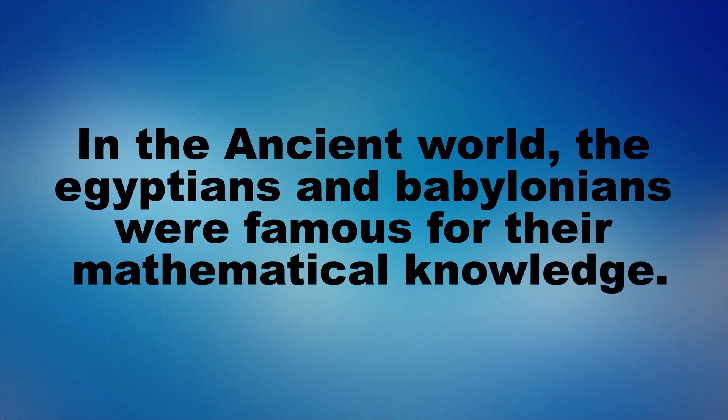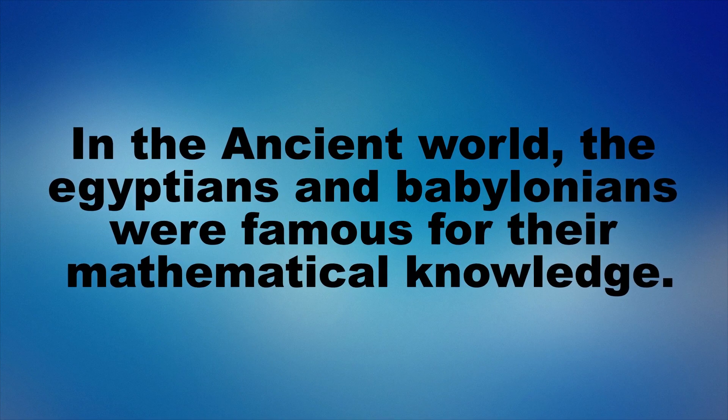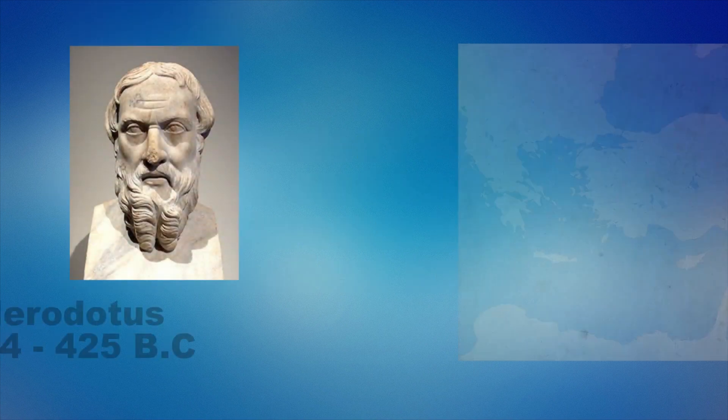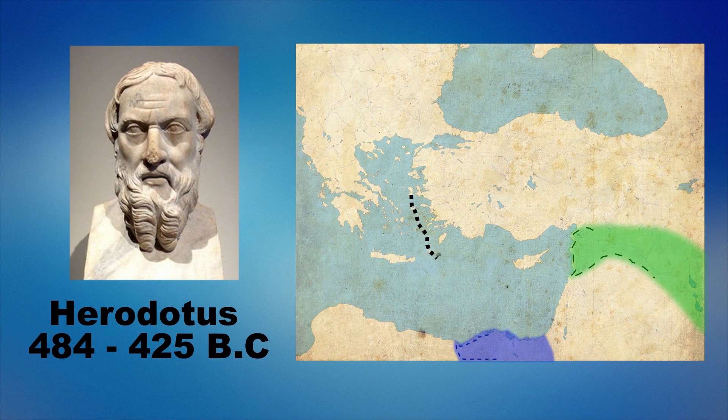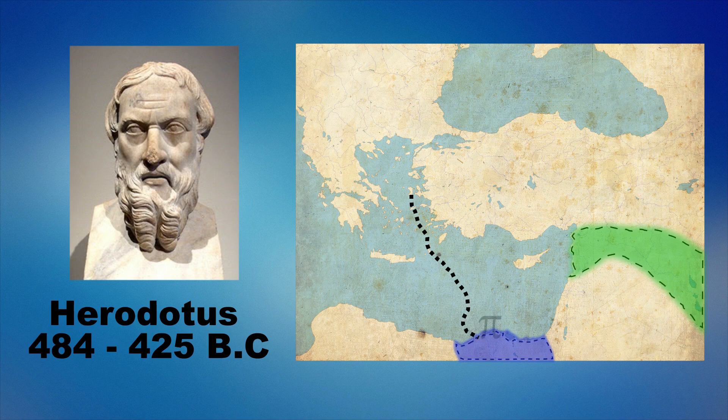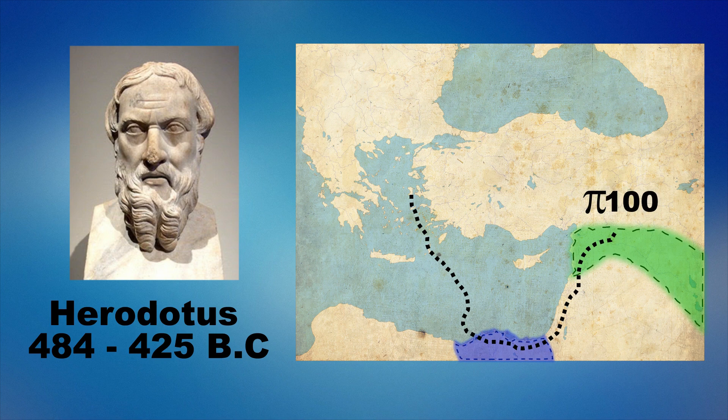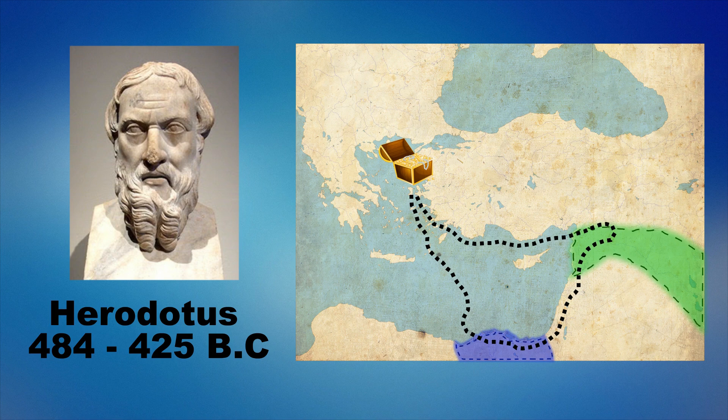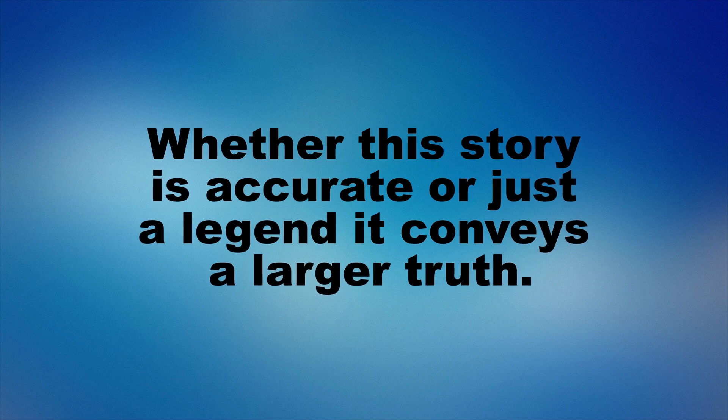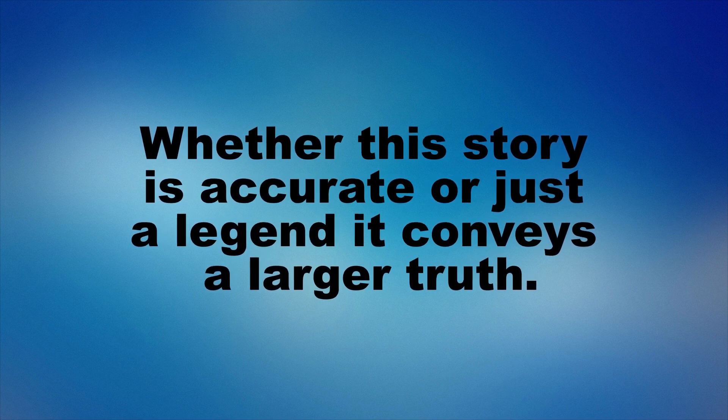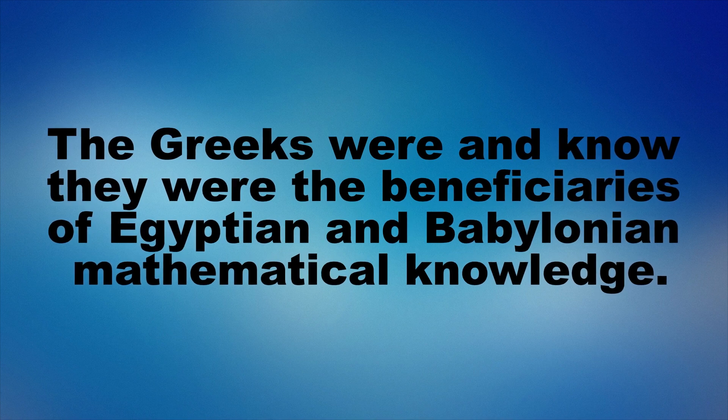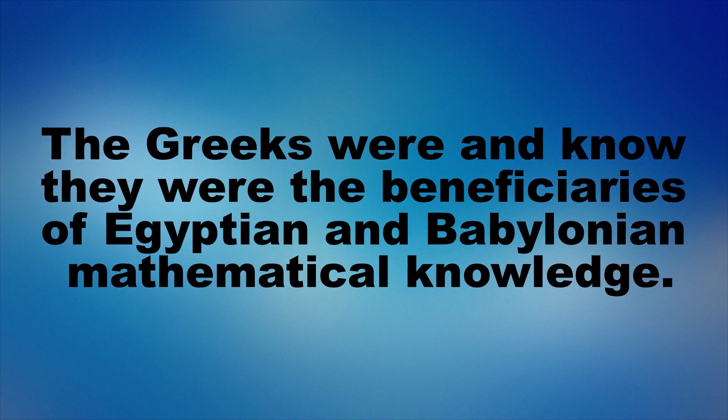In the ancient world the Egyptians and Babylonians were famous for their mathematical knowledge. In fact, the 5th century Greek chronicler Herodotus reported that Pythagoras had traveled to Egypt where he was introduced to the wonders of Egyptian mathematics by a priest, and that he later traveled to Babylonia where he came in contact with Babylonian mathematics and eventually traveled back to his home at the island of Samos, bearing the treasures of Egyptian and Babylonian mathematics with him. Now, whether this story is accurate or just a legend, it conveys a larger truth. Namely, that the Greeks were, and know they were, the beneficiaries of Egyptian and Babylonian mathematical knowledge.